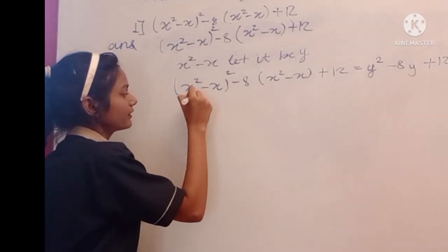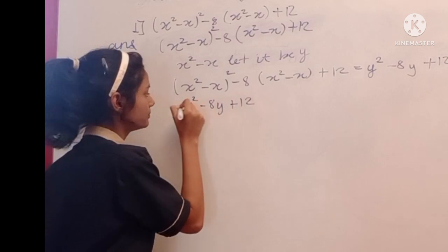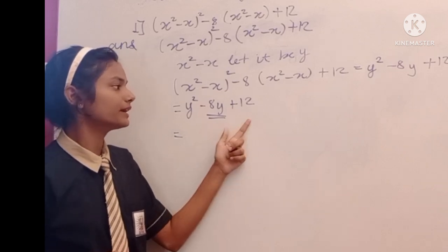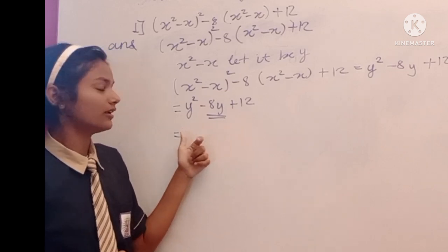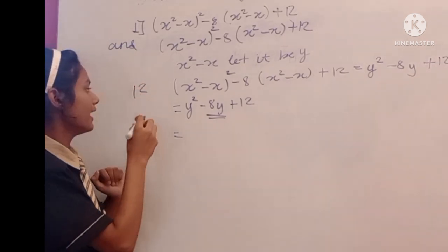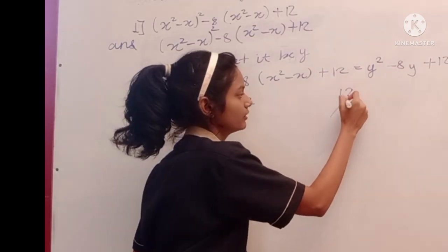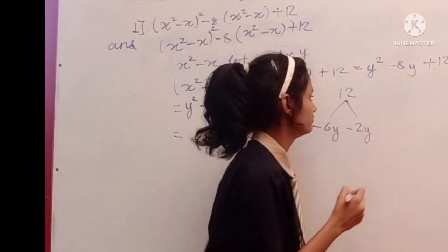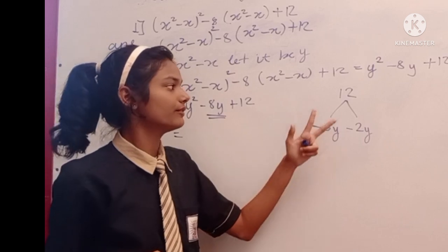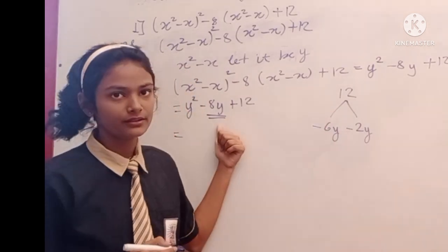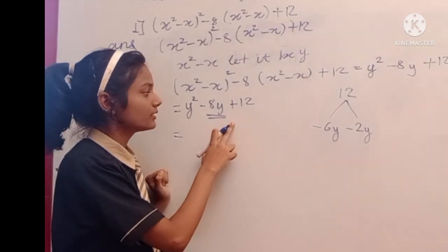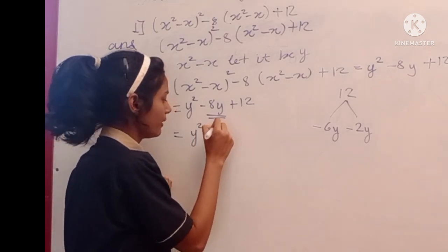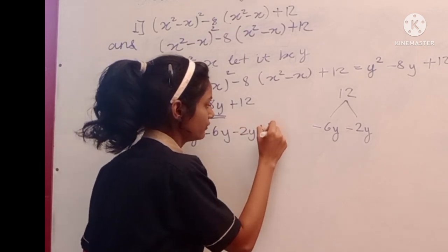Now we have to take this example and solve it by splitting the middle term. We need two numbers whose multiplication is 12 and whose addition is minus 8. We take its factors and find the two numbers are minus 6 and minus 2. When these two are multiplied we get 12, and when added they give minus 8. So we replace minus 8y with these two terms.